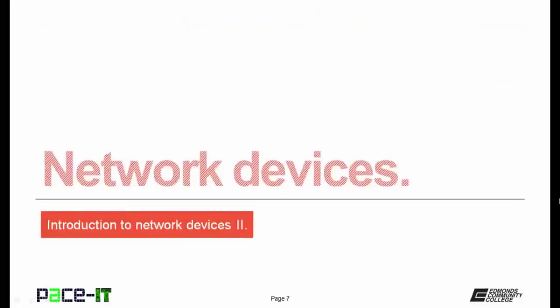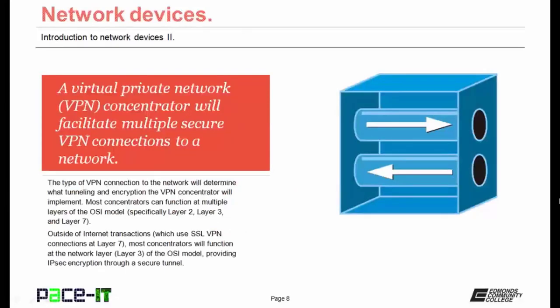Let's move on to some network devices, beginning with the VPN concentrator. A virtual private network concentrator, or VPN concentrator, will facilitate multiple secure VPN connections to a network. The type of incoming VPN connection will determine what tunneling and encryption the VPN concentrator will implement. Most concentrators can function at multiple layers of the OSI model, specifically at layers 2, 3, and 7. Outside of an internet transaction, most concentrators will function at the network layer, or layer 3, providing IPsec encryption through a secure tunnel.